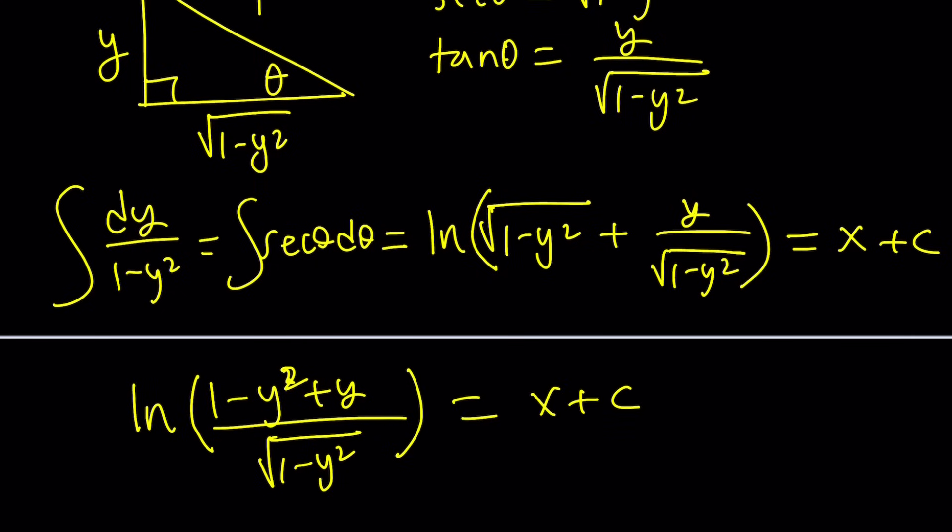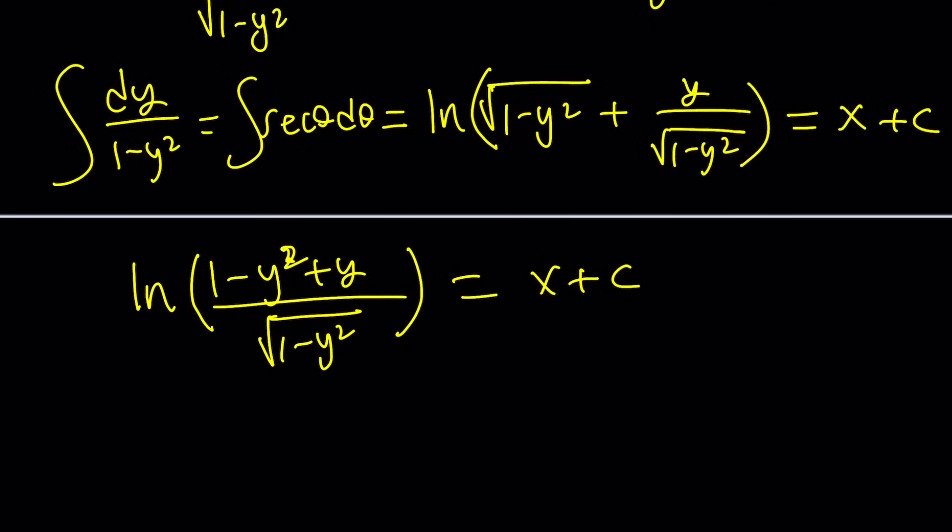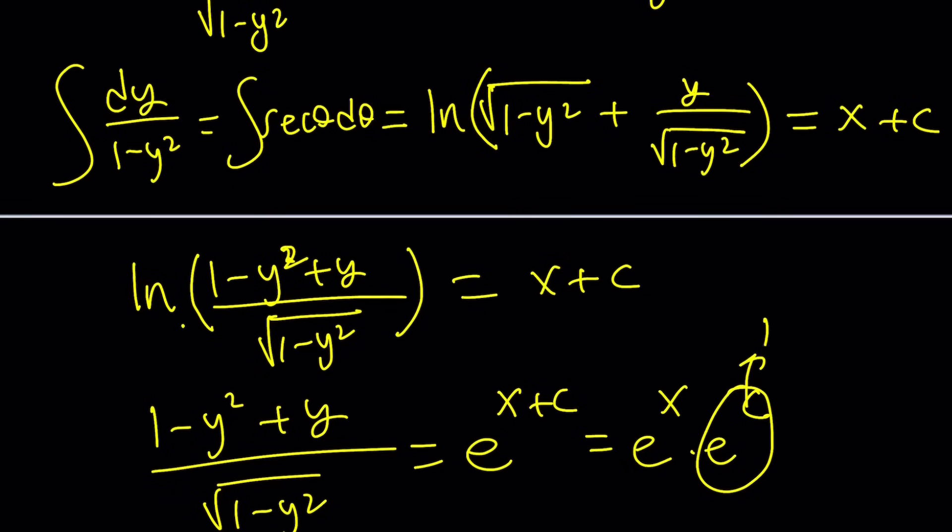Now, at this point, you can do something magical, and that is, you can use the definition. This is e, e to the power of that, so 1 minus y squared plus y over the square root of 1 minus y squared is going to be e to the power of x plus c, which you can write as e to the power of x times e to the power of c. Since c is a constant, e to the c is a constant. We can replace it with k, and this can be written as k times e to the power of x.